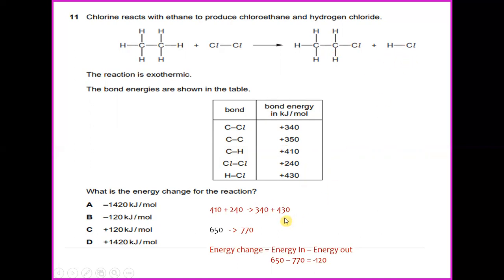From these two components to produce the reaction, we get the value of 340 plus Cl which is the value of 430. To get energy change is energy in 650 minus energy out 770, and the result will be minus 120. Minus means that it shows this is the process of exothermic and the value is 120 kJ per mole. So the answer would be B.